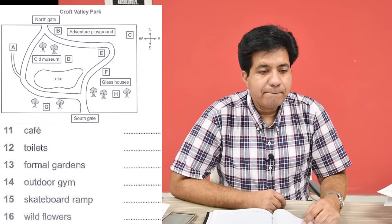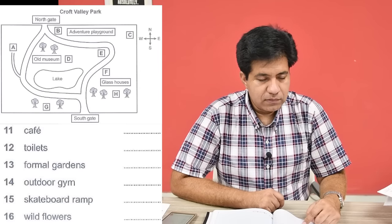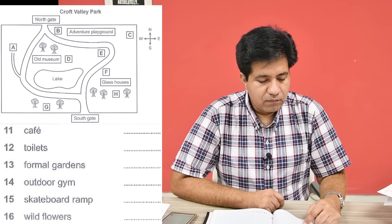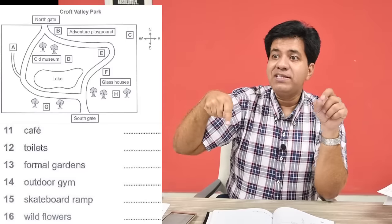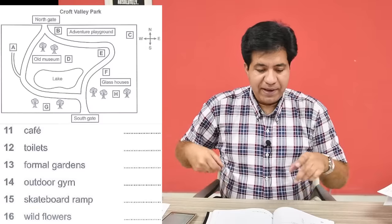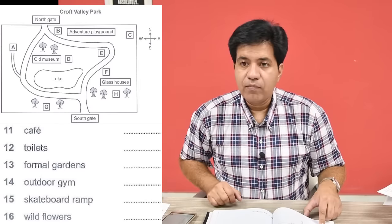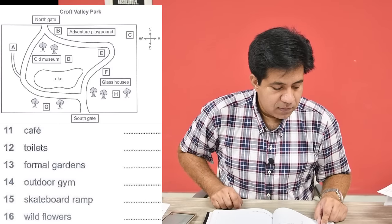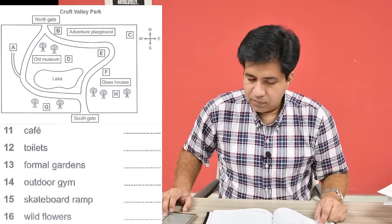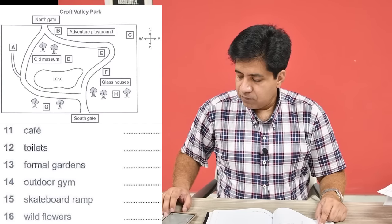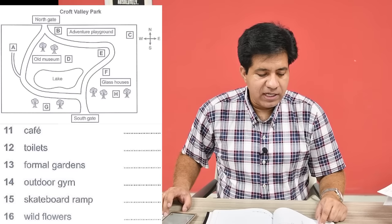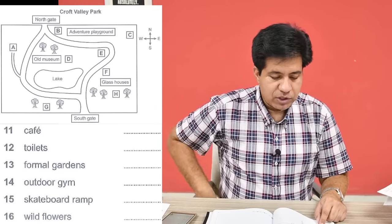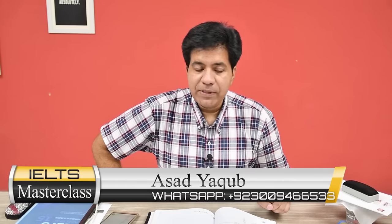Question number 16 — wild flowers. 'We've also introduced a new area for wild flowers to attract bees and butterflies. It's on a bend in the path that goes around the east side of the lake, just south of the adventure playground.' East side of the lake and south of adventure playground — and 'bend' means a curve. This is the east side and south of adventure playground, so it's E. All right, is that clear? Good.